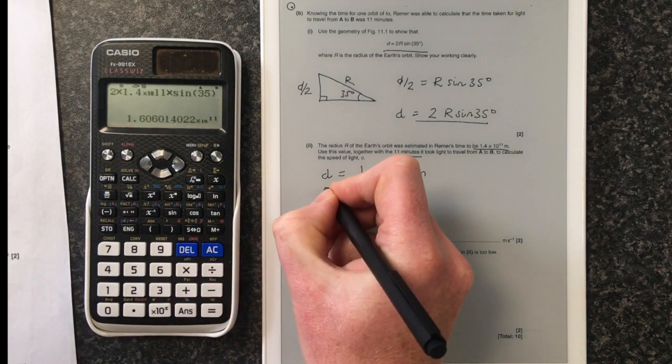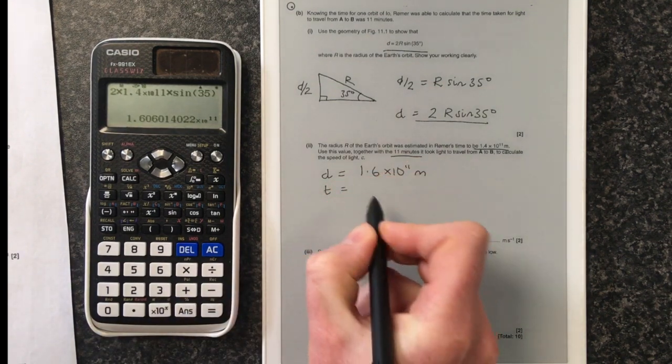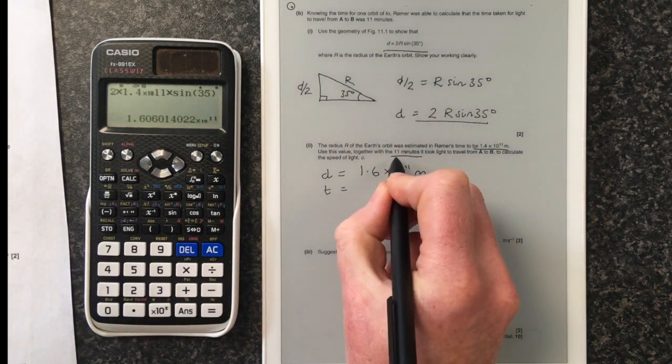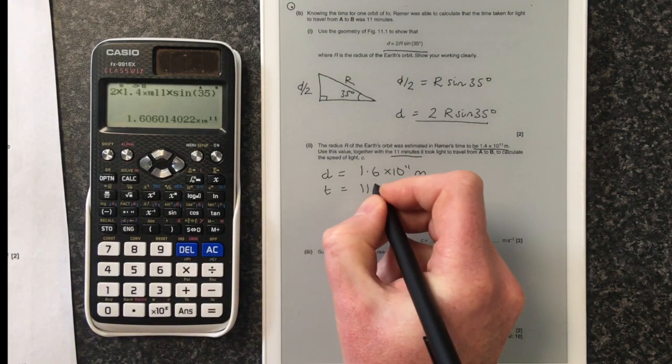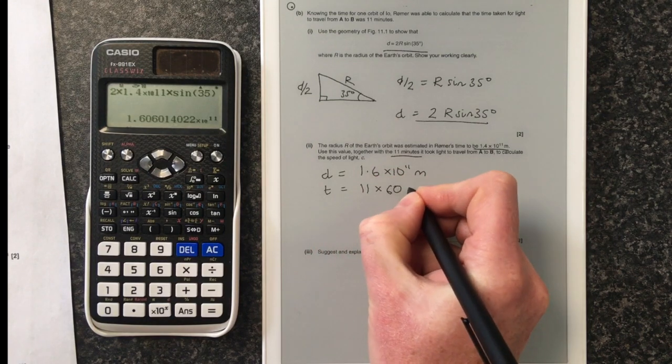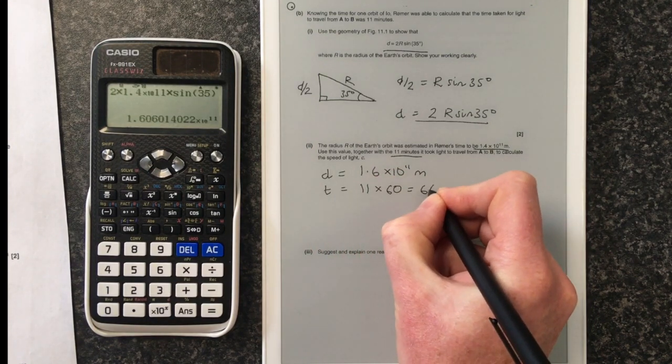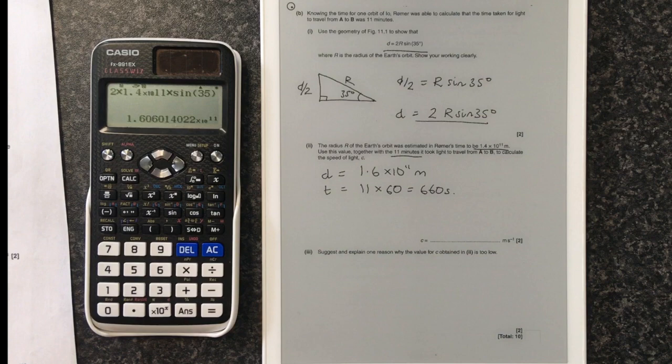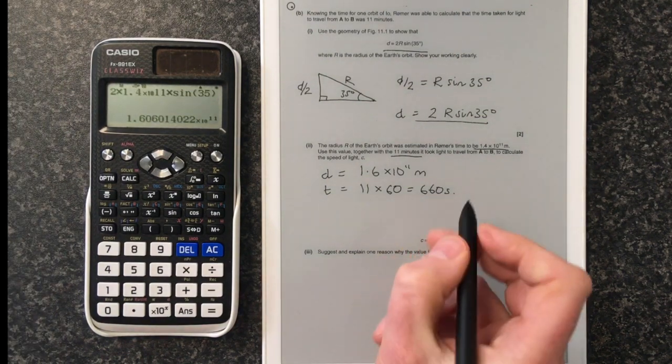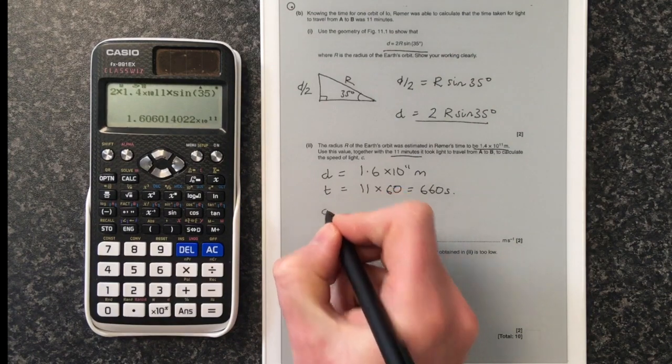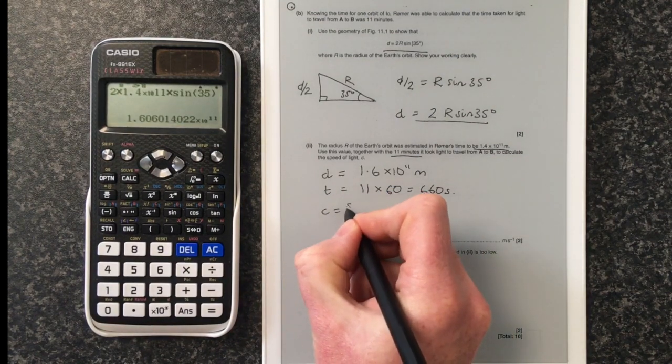And we know the time is going to be 11 minutes, but we don't want it in minutes, we want it in seconds. So it's going to be 11 times 60, which is 660 seconds. Now, we know that the speed, whether it's speed of light or anything, is distance over time.